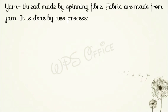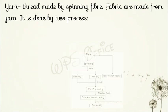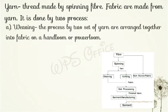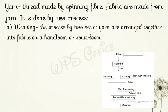Fabric is made by two processes. First weaving: the process by which two sets of yarns are arranged together into fabric on a handloom or powerloom. धागे के दो set जो एक के ऊपर दूसरा horizontal रखा जाता है, और इसी प्रकार से बुनावट की जाती है कि वह एक कपड़े के रूप में बदल जाए — चाहे हाथ से बनाया जाए (हाथकरघे से) या powerloom यानी machine से बनाया जाए। इसी weaving कहेंगे।